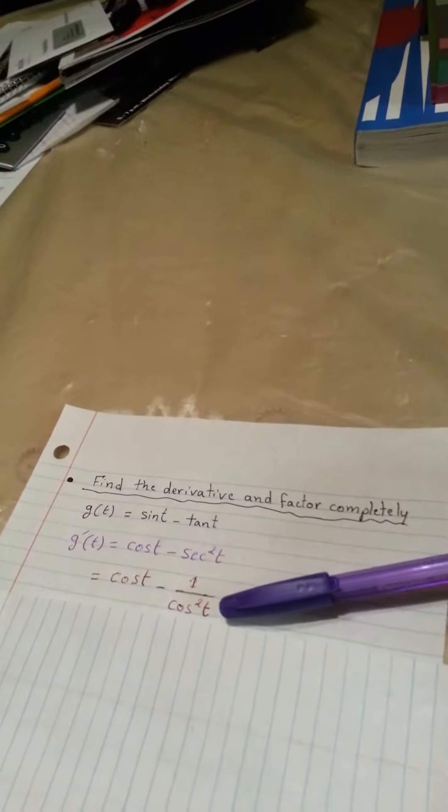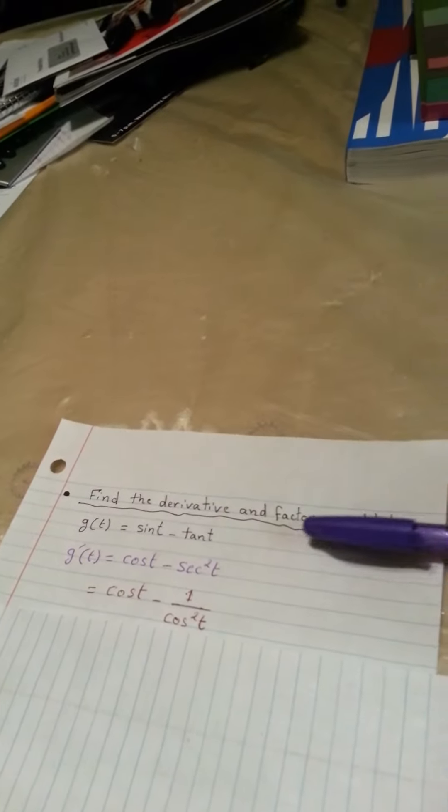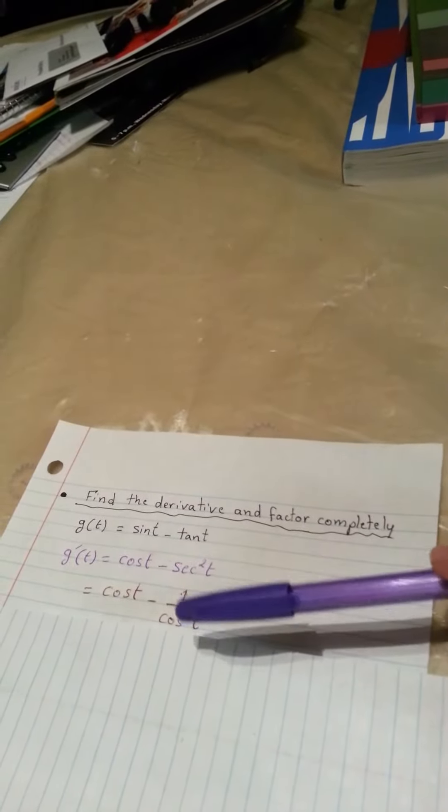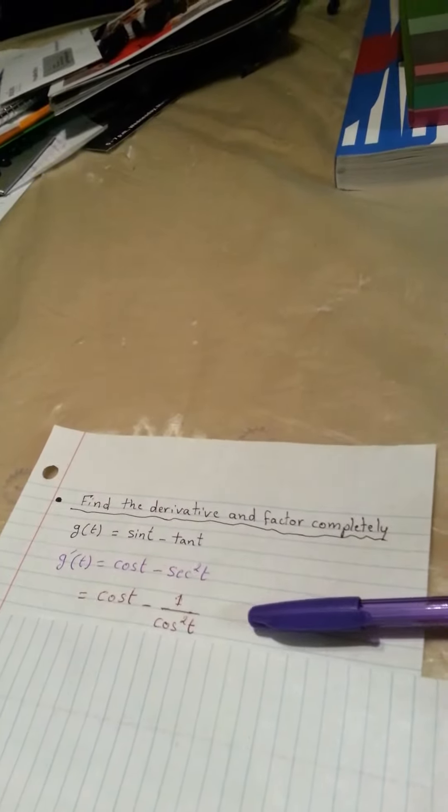We keep cosine t the same. We change secant squared t to become 1 over cosine squared t. Then we will subtract cosine t from 1 over cosine squared t by using the fraction rule.